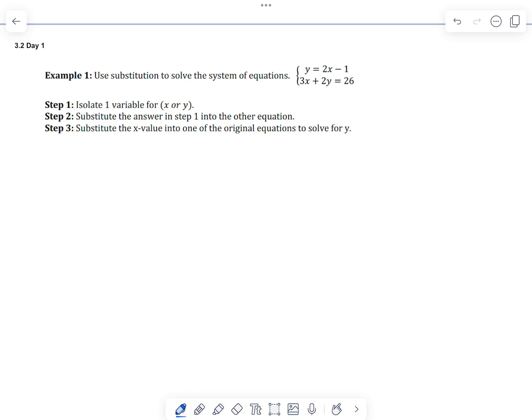So what's nice about this first example, step one has already been done for us. This y has already been isolated. So I'm just going to write that y equals 2x minus 1. So the top equation has been solved for y. So step one is done.